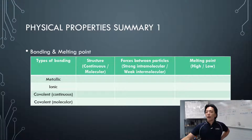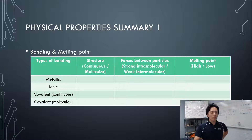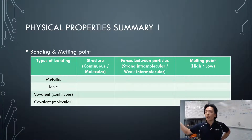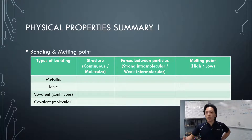For covalent continuous structures — like carbon making charcoal, or silicon making quartz — it's non-metals only. These are covalent continuous structures. The forces between particles, say between carbon and carbon in diamond, would be strong intramolecular. Therefore the melting point is also high.